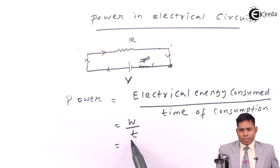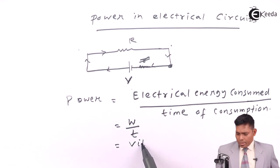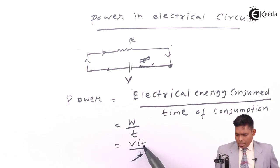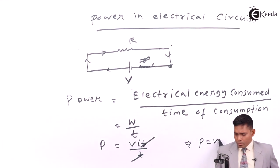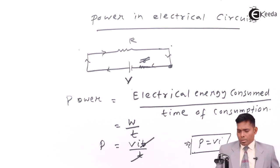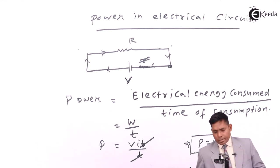Work divided by time, we discussed last time. That is V—this is the electrical energy divided by time, time cancels. That implies P equals to VI. This is the formula for power in electrical circuits.